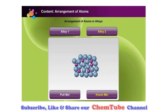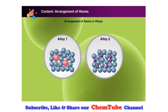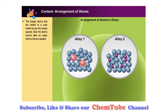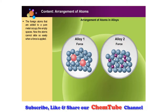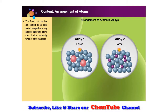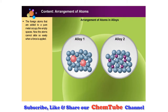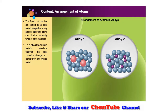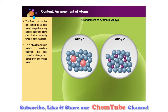From the observations in Alloy One and Alloy Two, we can see that the foreign atoms, be they big or small, occupy the spaces in between the metal atoms. The layers of atoms cannot slide over each other so easily when a force is applied — they get jammed in place. Thus, we can conclude that when two or more metals combine together, the alloy formed is stronger and harder than the original metal.